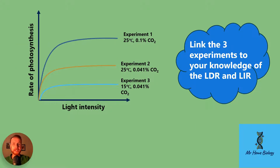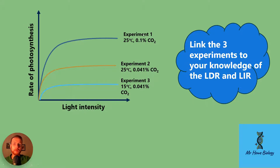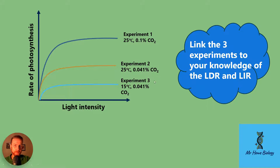You will see this type of graph in the exam. Rate of photosynthesis is on the y-axis and light intensity on the x-axis. Experiment one: 25 degrees Celsius, 0.1% CO2. Experiment two: 25 degrees Celsius, 0.041% CO2 — same temperature, less CO2. Experiment three: 15 degrees Celsius, 0.041% CO2 — lower temperature. The experiment with the highest temperature and highest CO2 concentration progresses at the fastest rate.